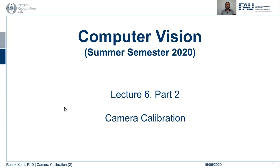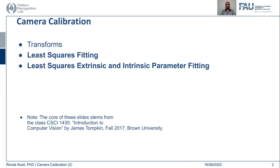Hello everyone and welcome back to Computivision lecture series. This is lecture 6 part 2. We will continue from where we left off last part. We were talking about camera calibration, and in that direction we saw some definitions of what transforms mean, how it is a global transform, different ways of fitting lines using least squares and total least squares. We saw two different methods of solving AX equals B and AX equals zero optimization problems, and in this part of the lecture we are going to see how we can use these optimization techniques in the context of recovering camera parameters.